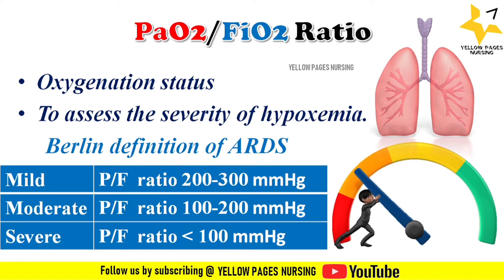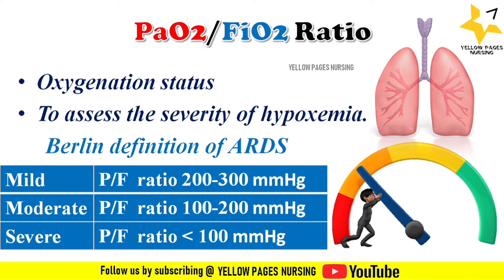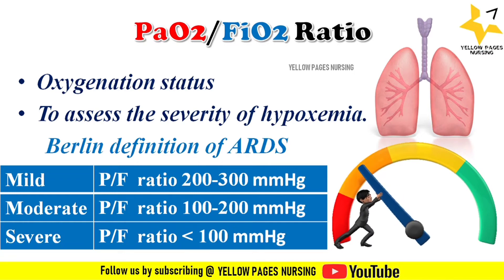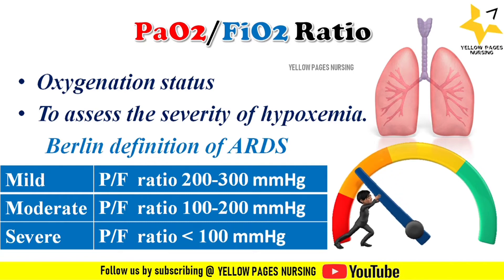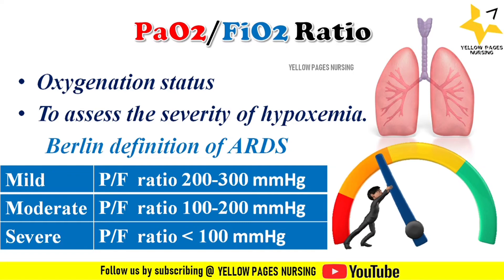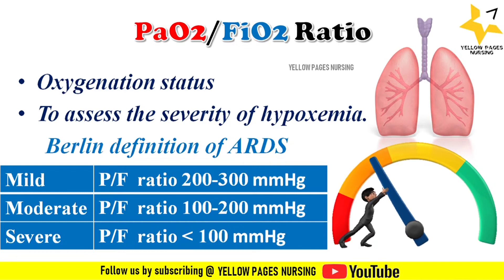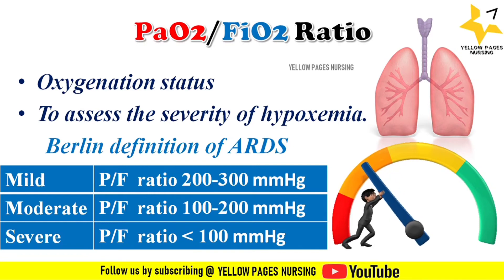According to the Berlin definition of ARDS, it is classified into mild, moderate, and severe based on the PF ratio. If the PF ratio is between 200 to 300 mmHg, it is mild ARDS. Between 100 to 200 mmHg indicates moderate ARDS. Below 100 mmHg indicates severe ARDS, with a positive end-expiratory pressure (PEEP) of more than 5 cmH₂O.